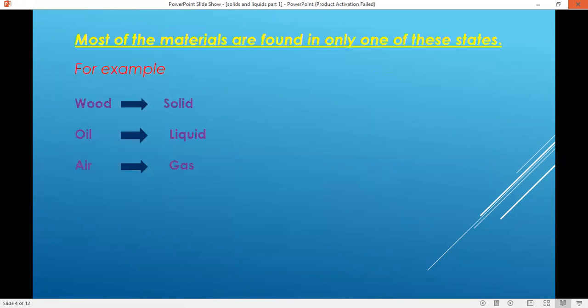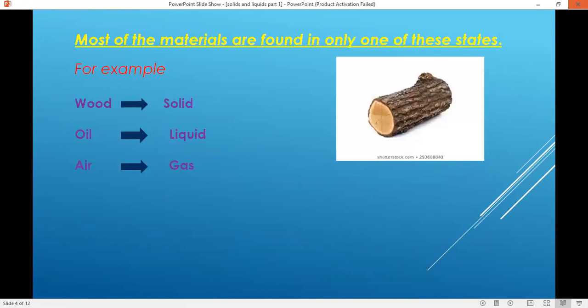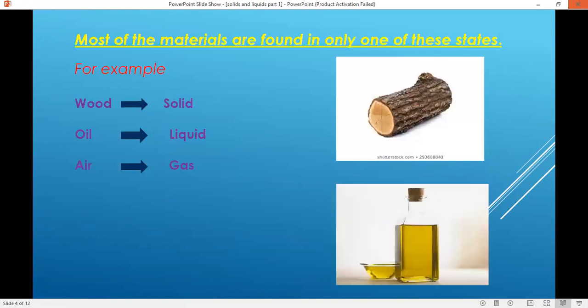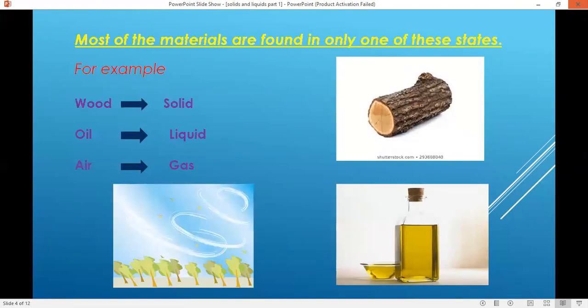Most of the materials are found in only one of these states, meaning we usually find any material in one of these states. For example, wood is present in the form of solid, oil is present in the form of liquid, and air is present in the form of gas because it is the mixture of different gases.